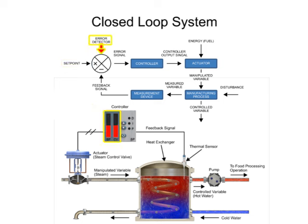Error detector compares the set point to the feedback signal and produces an output proportional to the difference between them. Error signal is the output of the error detector. If the feedback signal and set point are equal, the error signal is zero.